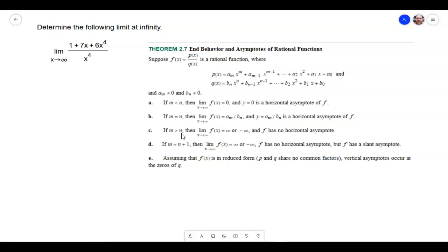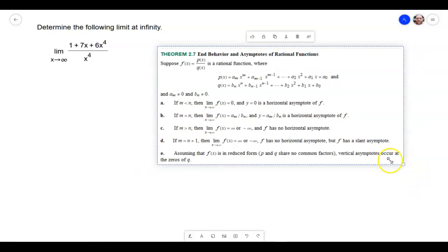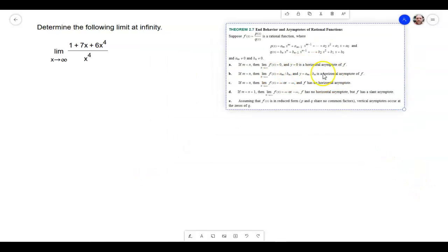Here's where the top exponents are larger than the bottom exponents. Remember, we're talking about the highest exponent here. And then here we have another case when the top is just one higher than the bottom. And we don't have a horizontal asymptote, but we do have what's called a slant asymptote. And they do an example of that, example 4 on page 97 as well.